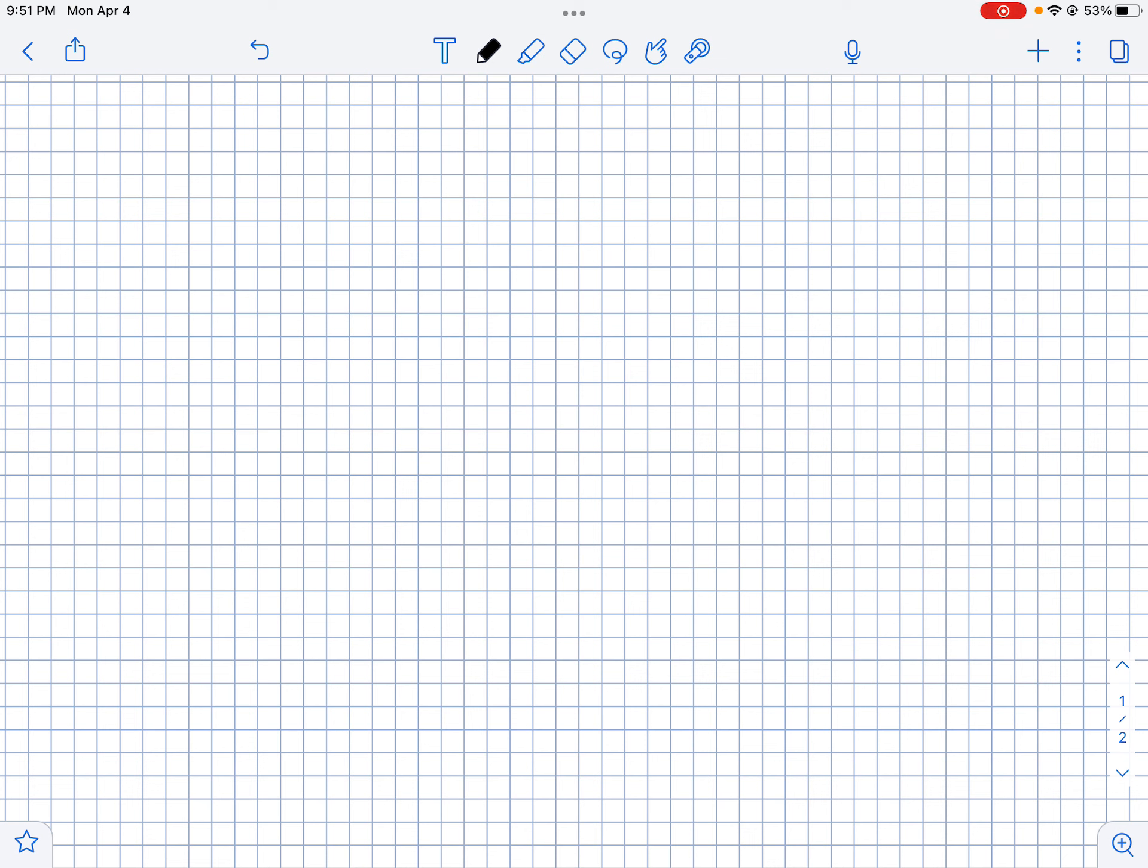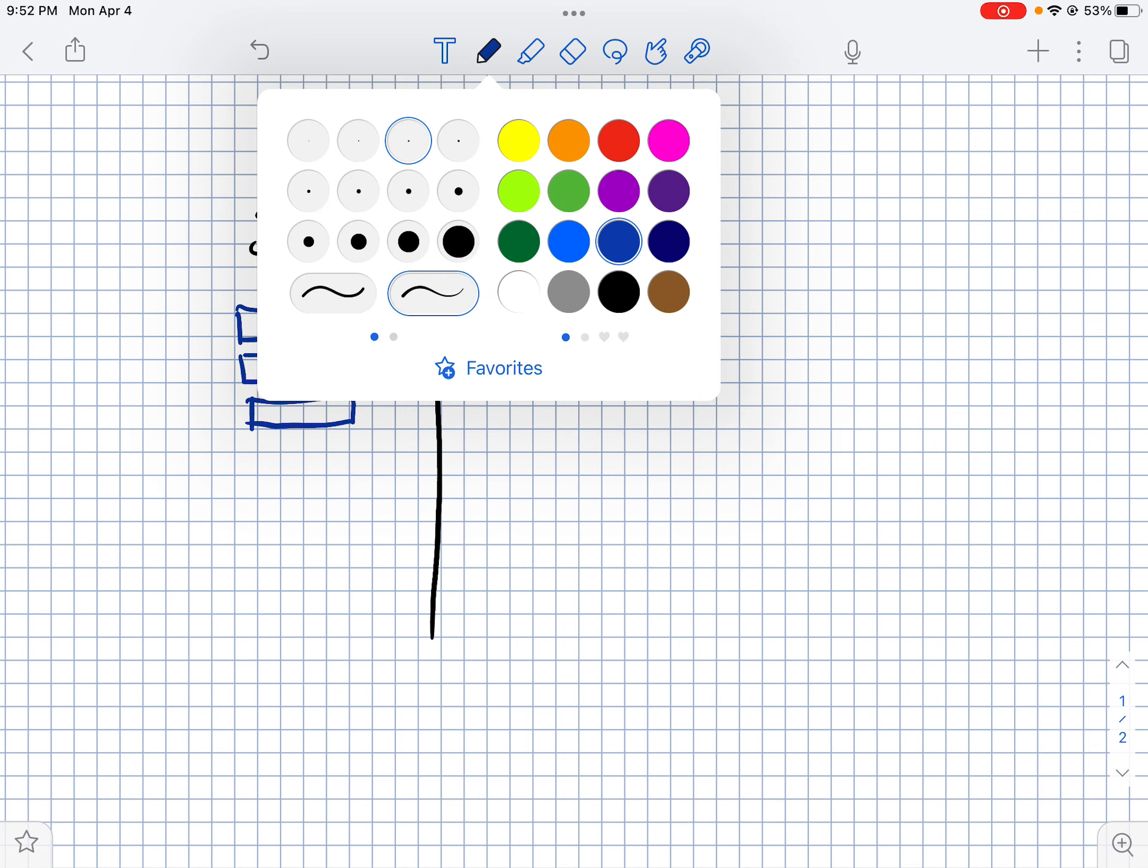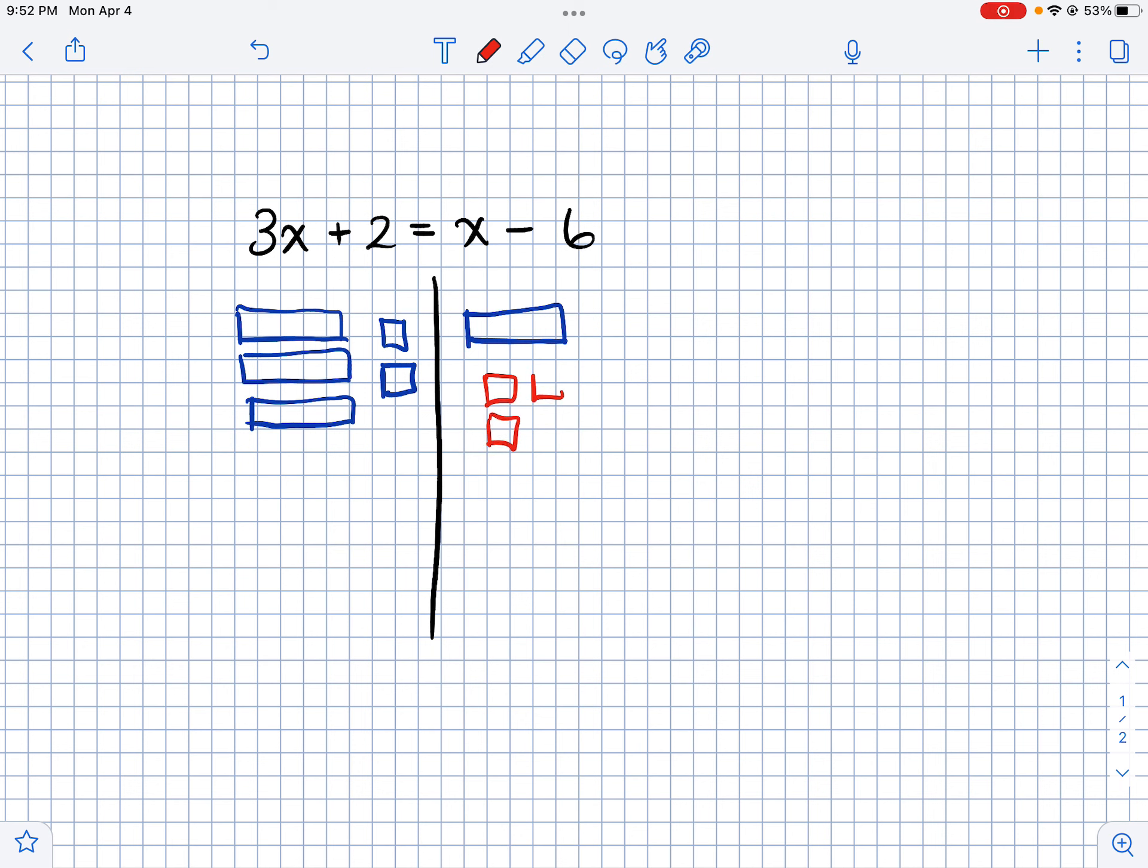And then finally you can also solve equations using algebra tiles. So let's say we want to solve the equation 3X plus 2 equals X minus 6. So I'm going to put a line down here to represent my left and right side. So I've got 3 X's on this side. And then I've got 2 ones. And then on the right side I have an X tile and then I have 6 negative 1s.